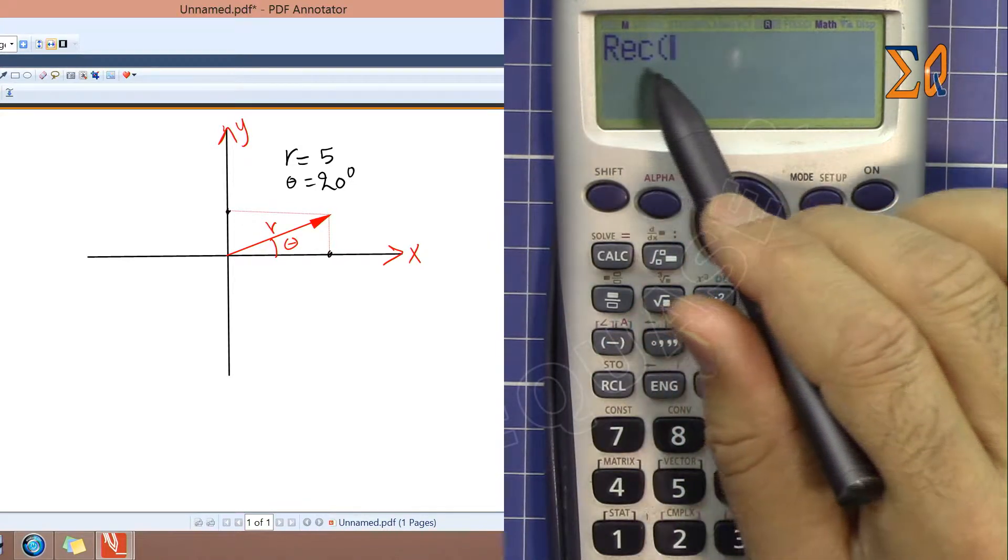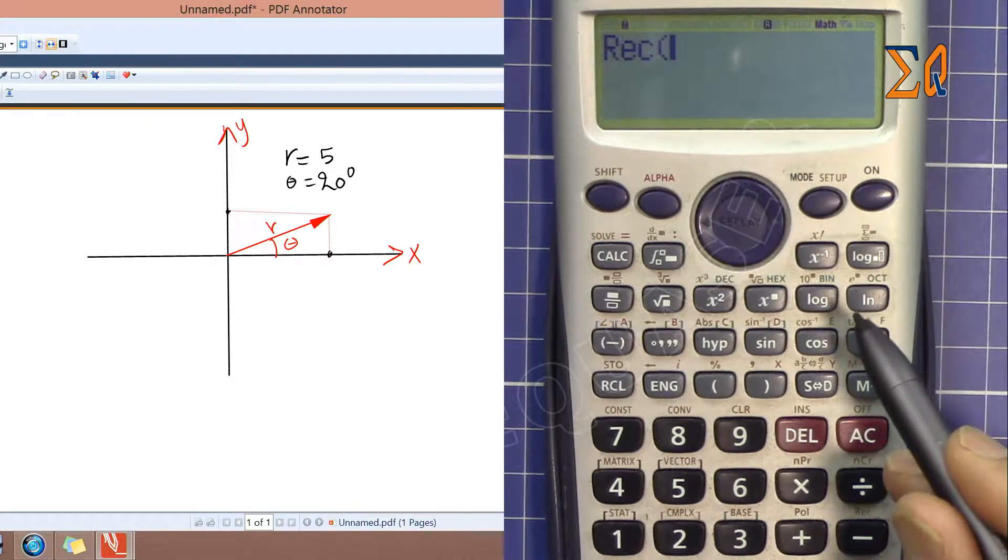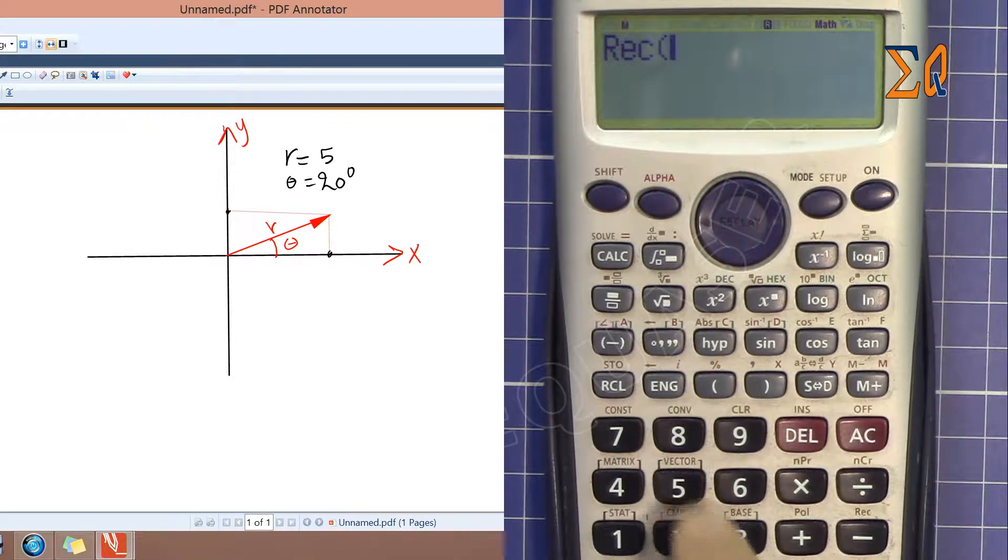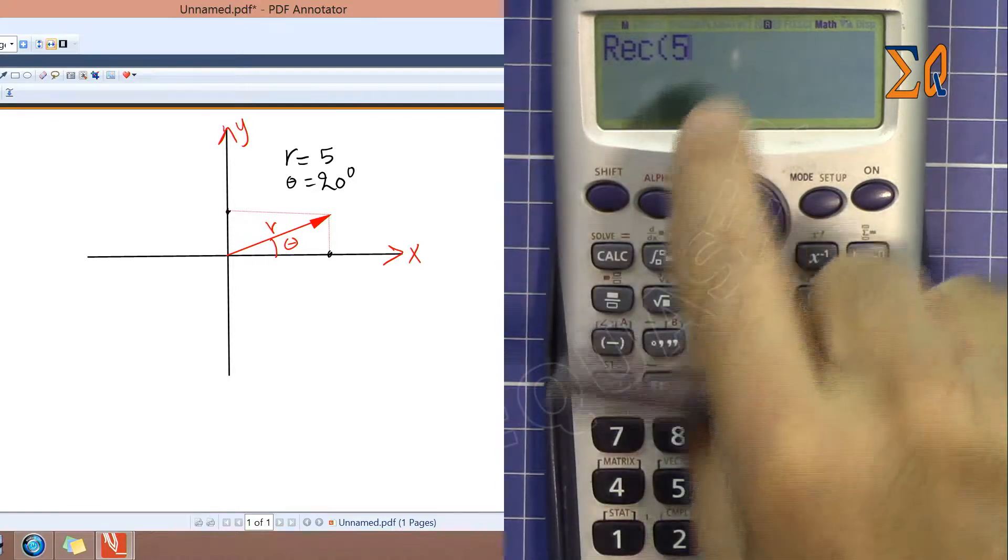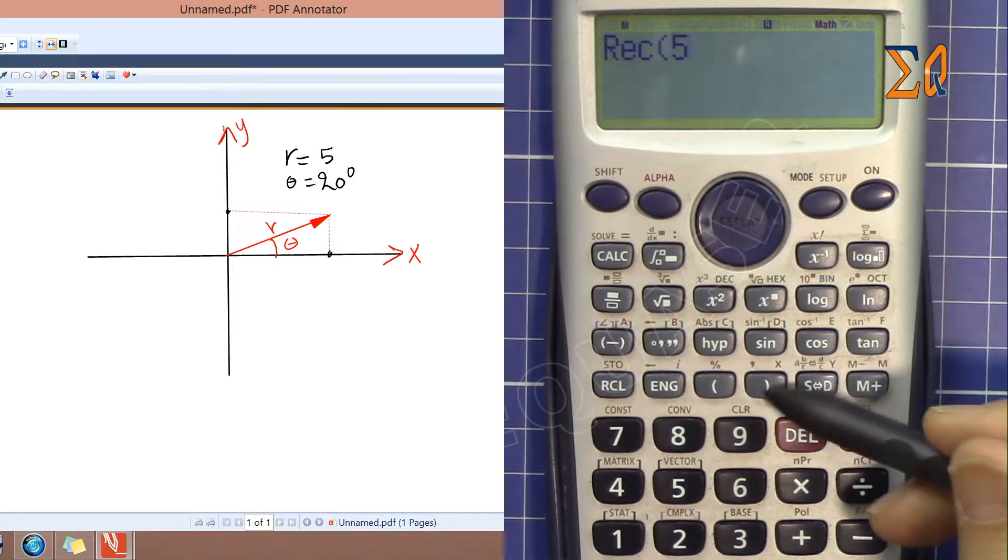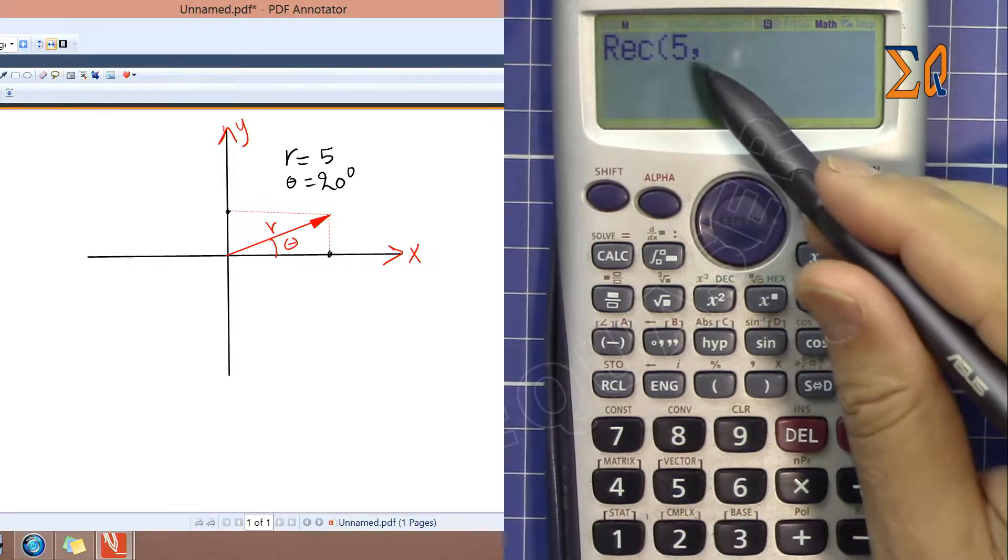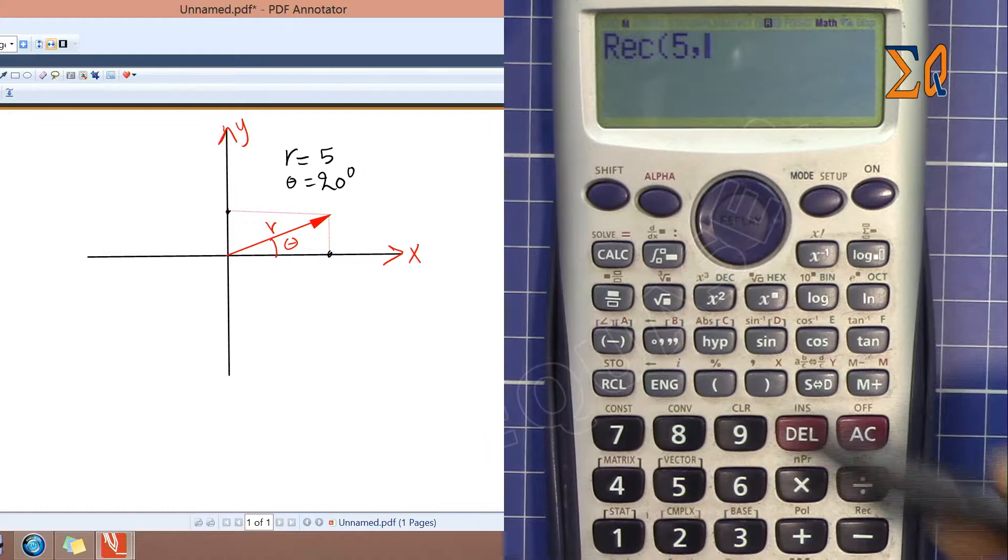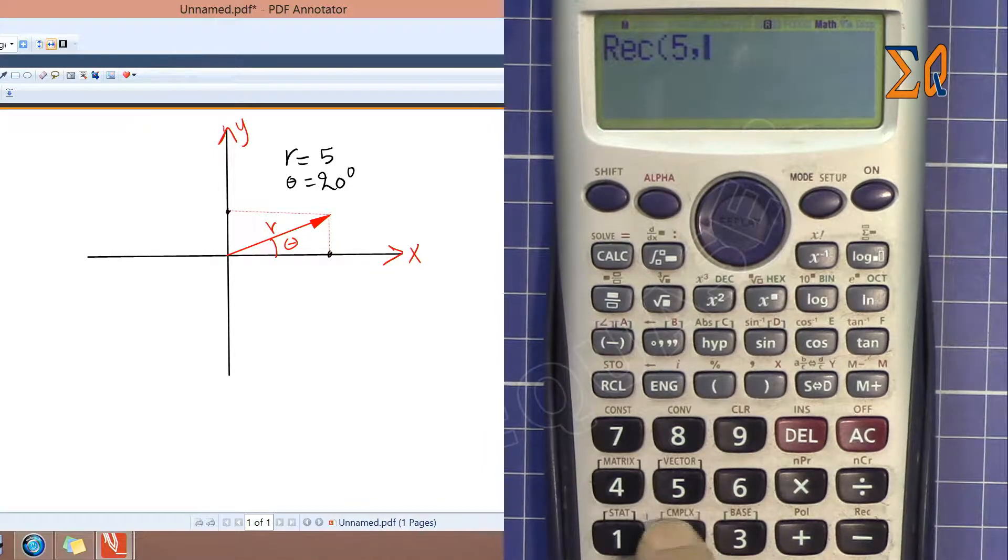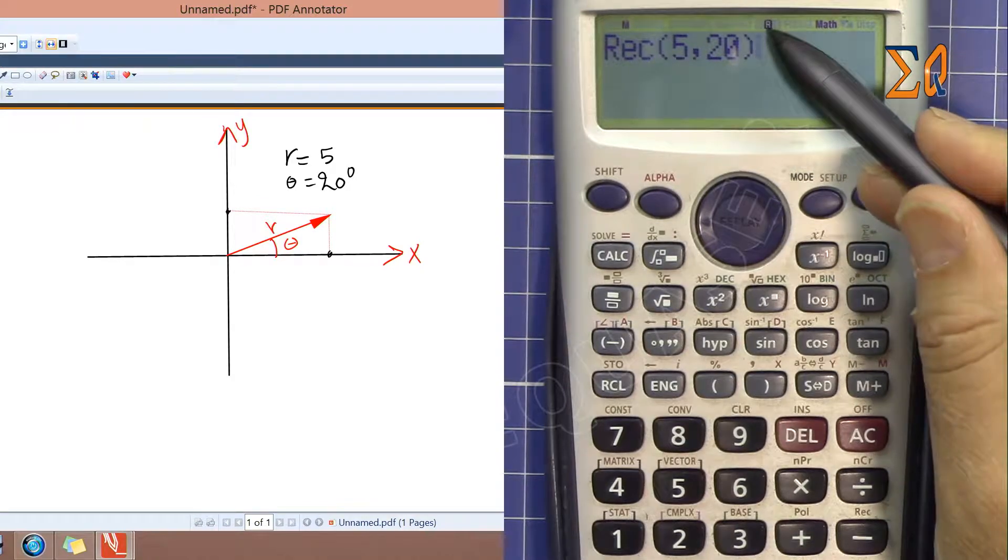Now we need to enter R first and then the angle second. R is 5, and then we enter the angle. To enter the angle we press this closing parenthesis, here is a comma. Press shift comma and then the angle. The angle is 20 degrees. Now my calculator is set at radian